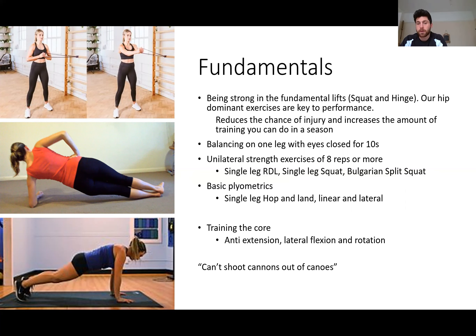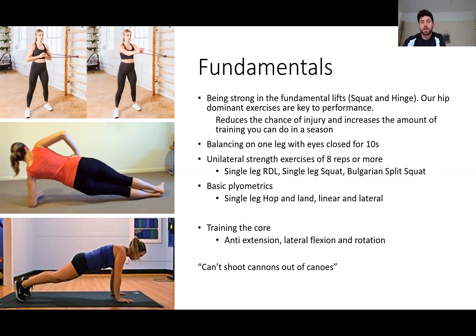We then want to train the core. The core is our facilitator and conduit for producing force in the legs all the way up to the wrist. The three movements that are really important are anti-extension, anti-lateral flexion, and anti-rotation. It's based around the principle that you can't shoot cannons out of canoes — getting a strong base and then building on top of that.